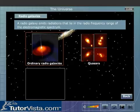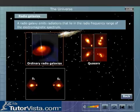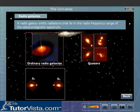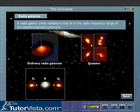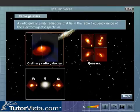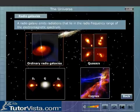Ordinary radio galaxies have two radio sources, S1 and S2, that lie on either side of the central optical galaxy G, much like the two ears on either side of the face of a person. Cygnus A is a good example of a radio galaxy.